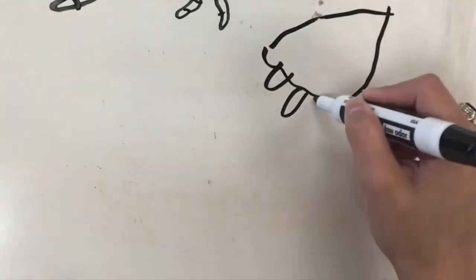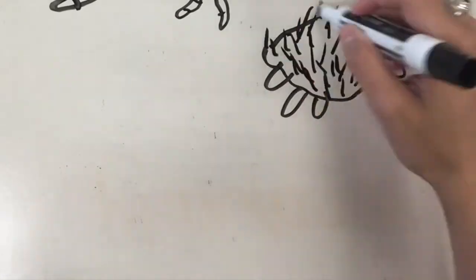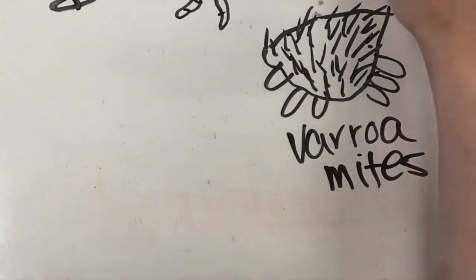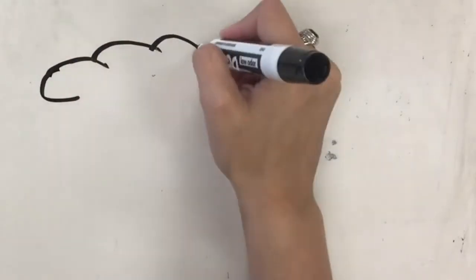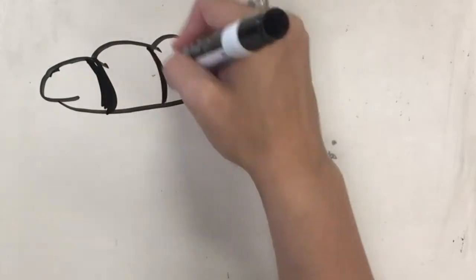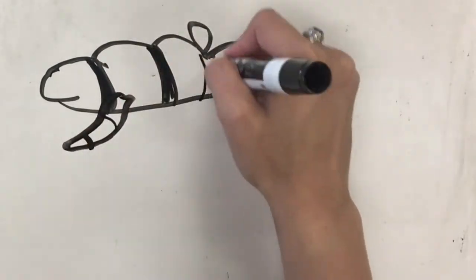Varroa are parasitic mites that feed off of the bodily fluids of honeybees. While relatively harmless on their own, they carry and transmit blood-borne illnesses that can wipe out entire bee colonies. For this reason, their presence within a hive may foreshadow complete colonial collapse.